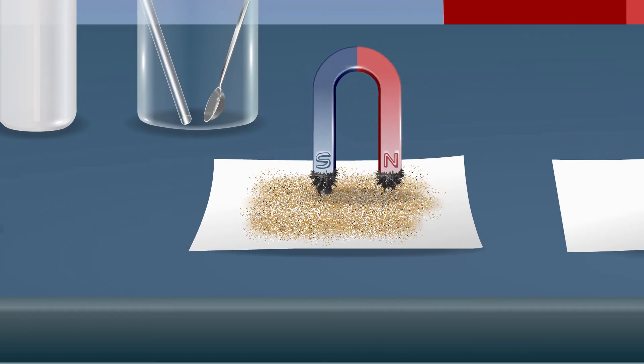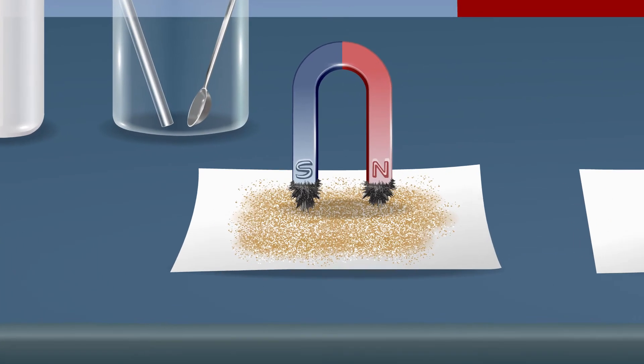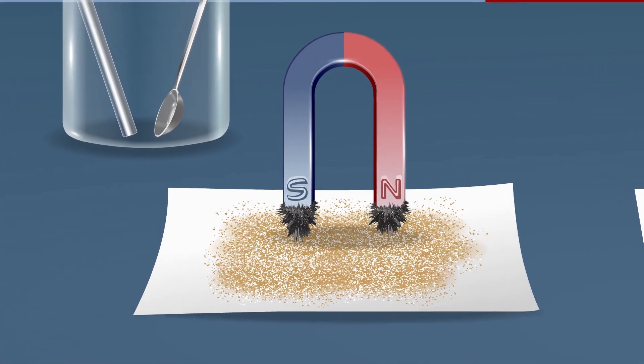Move a magnet over the surface of the mixture. We observe that iron filings stick to the magnet and are thus separated.